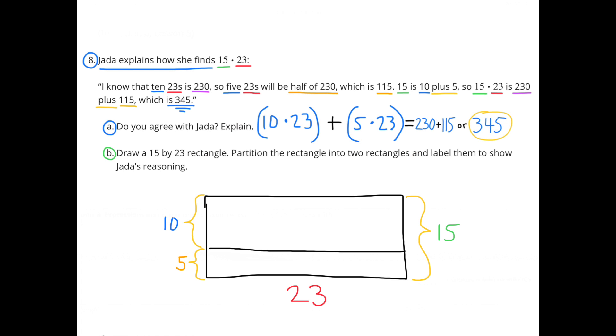B. Draw a 15 by 23 rectangle, partition the rectangle into two rectangles, and label them to show Jada's reasoning. One rectangle can be partitioned into two rectangles stacked on top of each other.